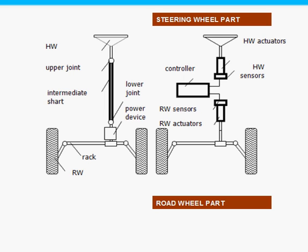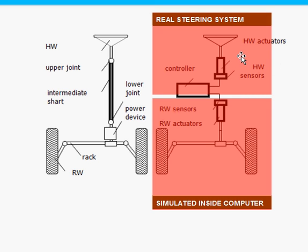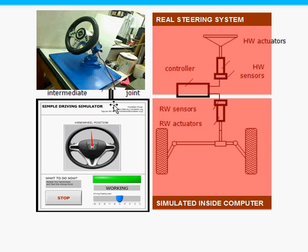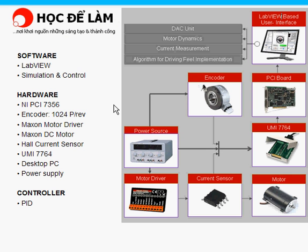The left picture shows the conventional steering system and the right one shows the steer-by-wire system. The intermediate shaft is removed and sensors and actuators are used to replace the hydraulic and mechanical link. You can see that the driver cannot feel the road wheel forces, so that's why we have to use the computer to generate the virtual forces. The hand wheel part is a real steering system and the road wheel part is simulated inside the computer.